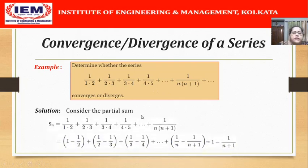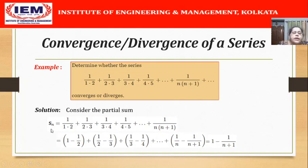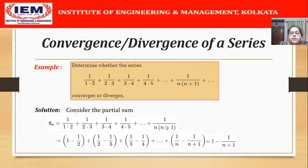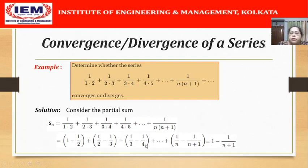Let us write down the partial sum S_n. S_n is the sum of the first n terms, so the first term is 1/(1·2), the second is 1/(2·3), and the nth term is 1/(n(n+1)). To add these terms, we notice that 1/(1·2) can be written as 1 - 1/2; the second term as 1/2 - 1/3; the next term as 1/3 - 1/4; and the nth term 1/(n(n+1)) can be written as 1/n - 1/(n+1).